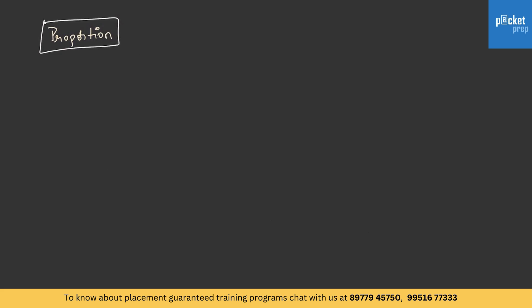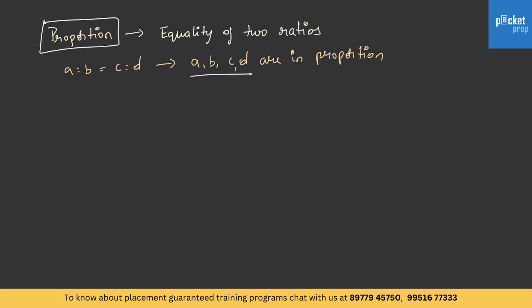Now let's understand what proportion means. Proportion is nothing but equality of two ratios. If A is to B is equal to C is to D, then A, B, C, D are in proportion. For example, 3 is to 27 is equal to 9 is to 81. As these two ratios are equal, we can say that 3, 27, 9, and 81 are in proportion.